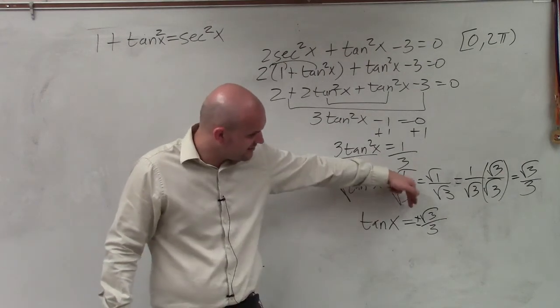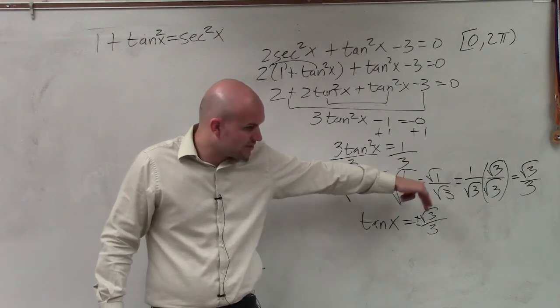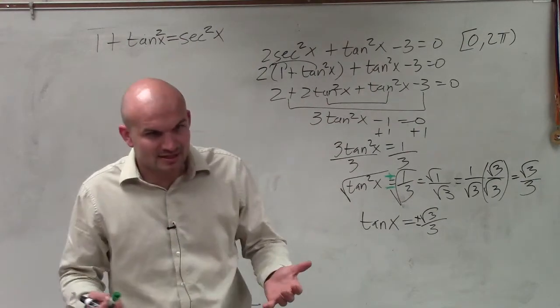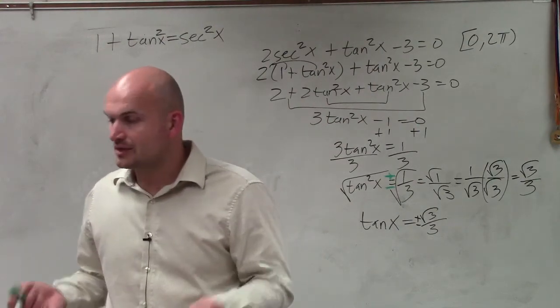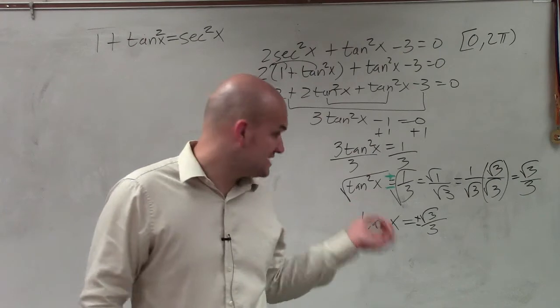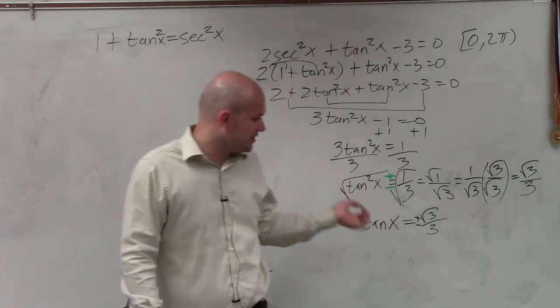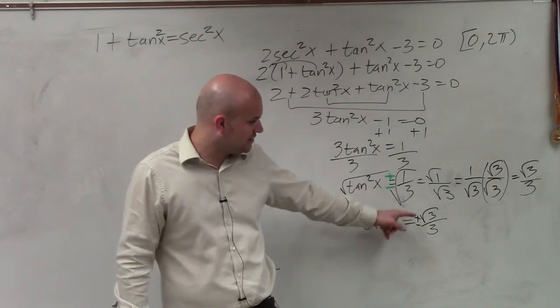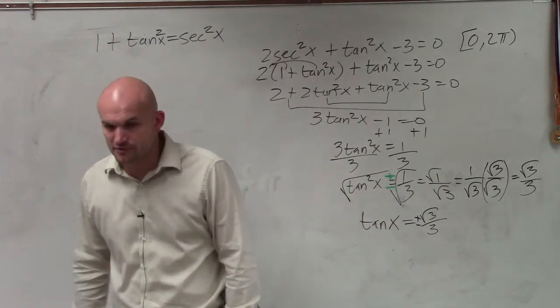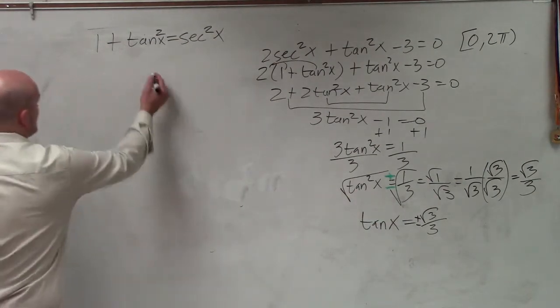So you have tanx = ±√3/3. When does our value of x represent, or for tangent, for what angle is tangent, the value of our angle, tangent of our angle, equal to plus or minus the square root of 3 over 3? So to do that, we need to go back to our unit circle.